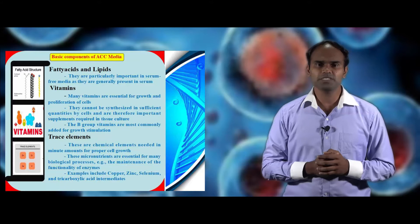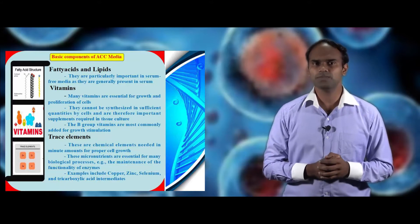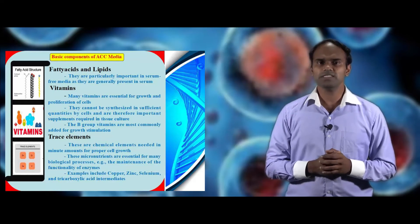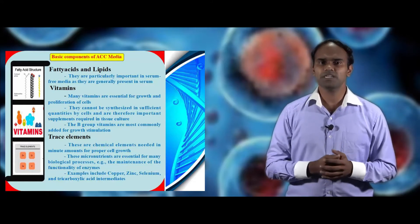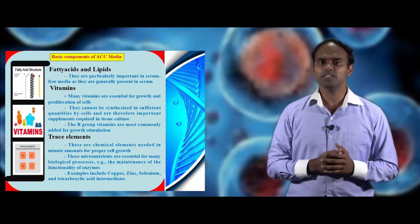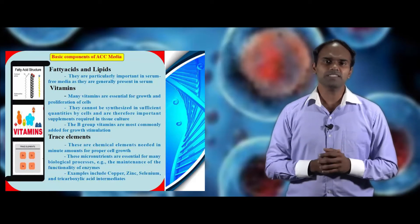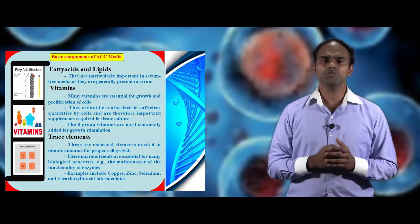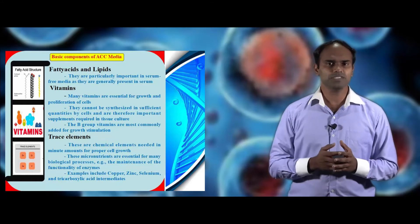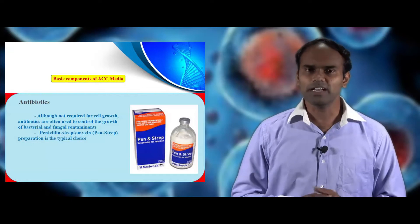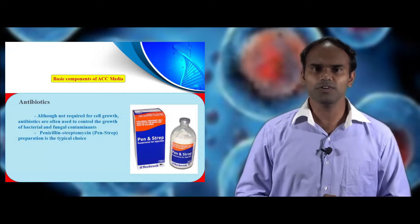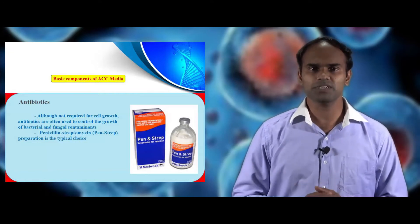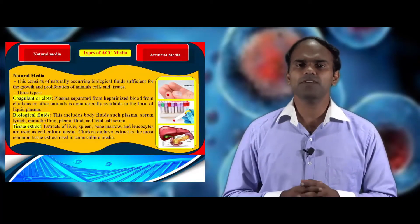Now we see about fatty acids and lipids. These are very important in serum-free media because they are generally present in serum. Vitamins are very important for cell growth and proliferation; since cells cannot synthesize sufficient amounts, they need to be supplemented in the media. B vitamins, for example, are very helpful for stimulating cell growth. Trace elements help in many biological systems, such as maintaining enzyme functionality. Examples include zinc, copper and selenium. Antibiotics are not essential for cell growth but help to control bacterial and fungal contamination. The most widely used combination is penicillin-streptomycin, also called pen-strep.